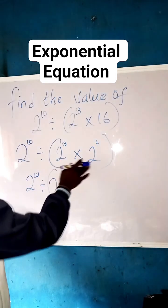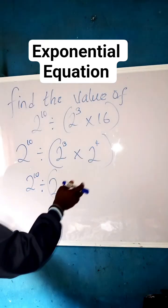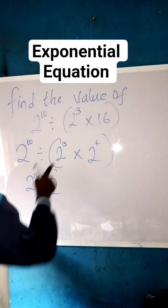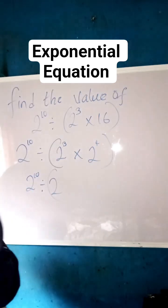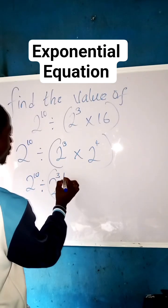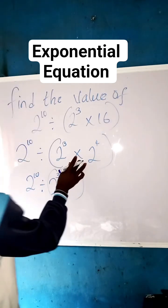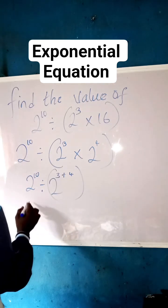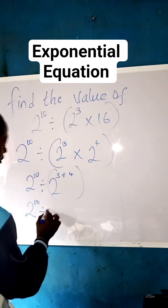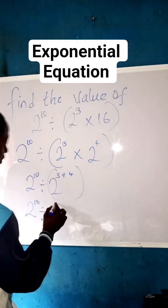Whenever we are having the same base with different powers and the multiplication sign is there, we can equally pick one of the base and add up the power. So that we now have 2 raised to power of 3 plus 4, why? Because of the multiplication sign. So that we now have 2 raised to the power of 10 divided by 2 raised to power of 7. 3 plus 4 gives 7.